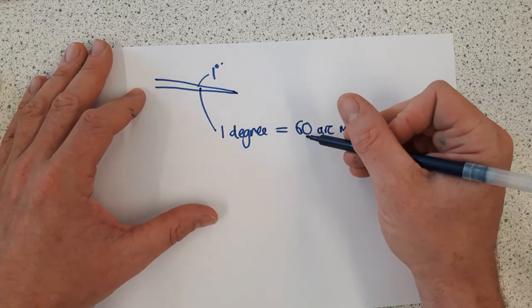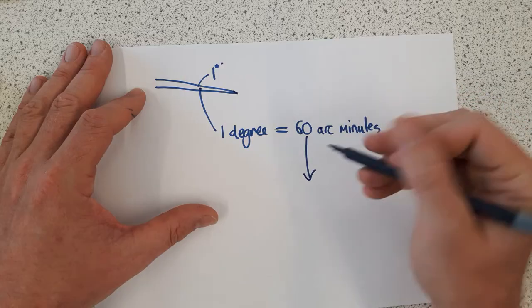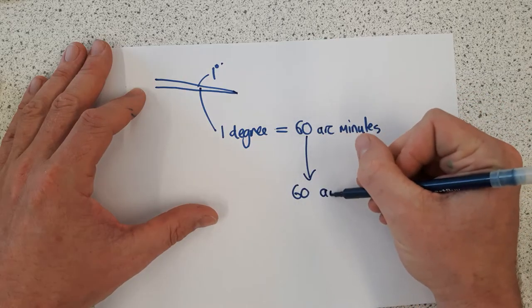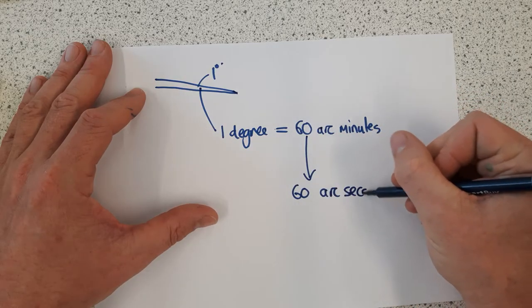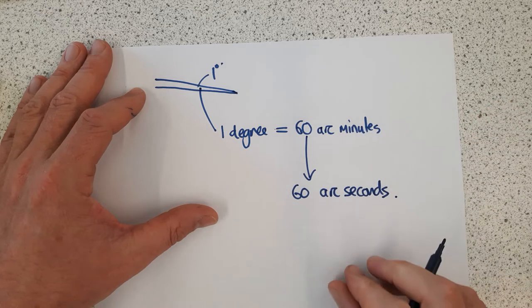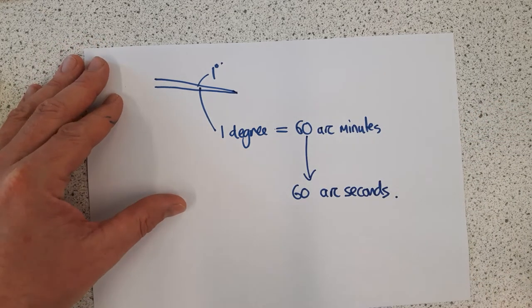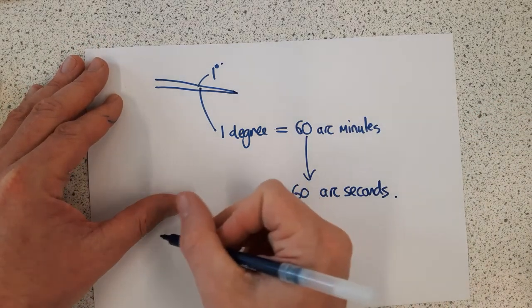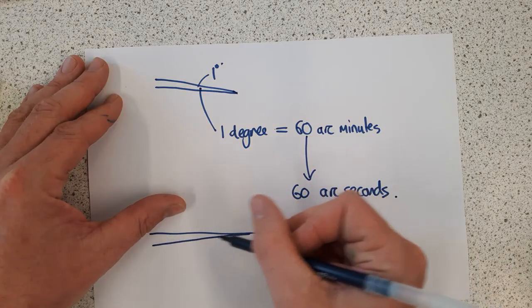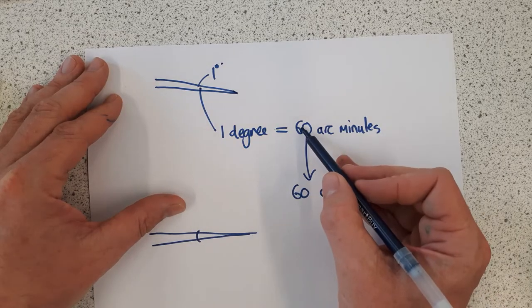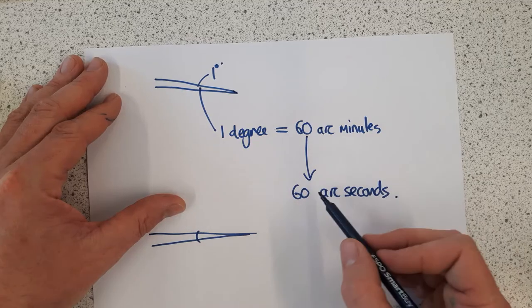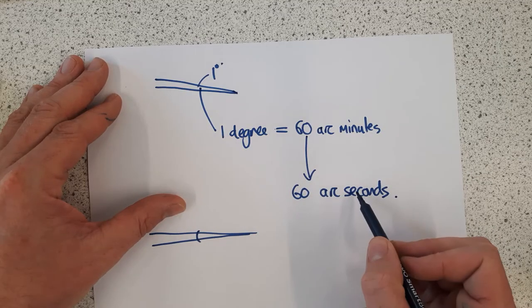Each arc minute can also be divided up into 60 arc seconds. This is the way that we consider angles in space. One degree is made up of 60 arc minutes, and each of those 60 arc minutes is made up of 60 arc seconds.